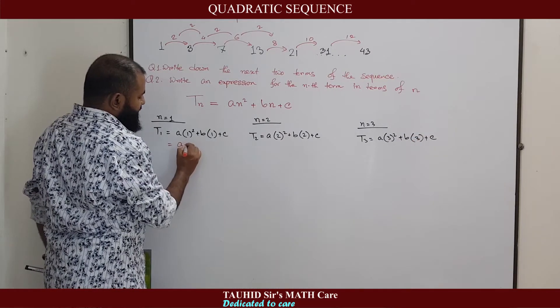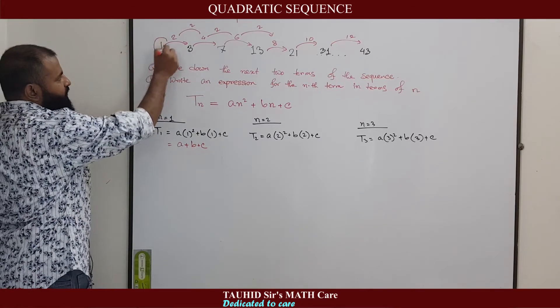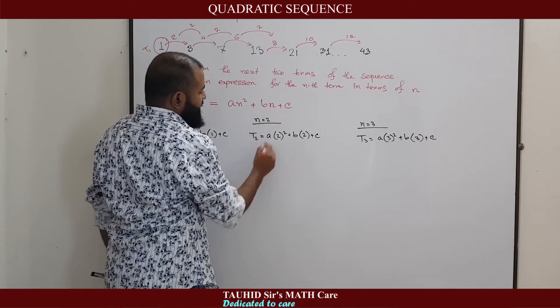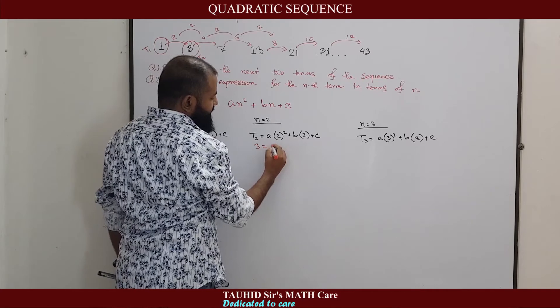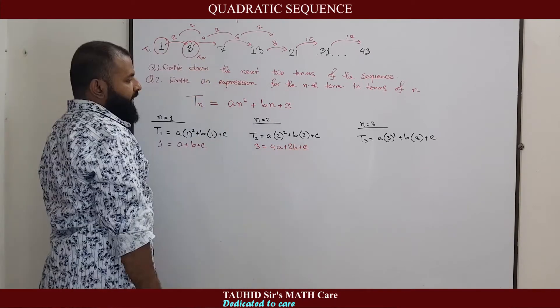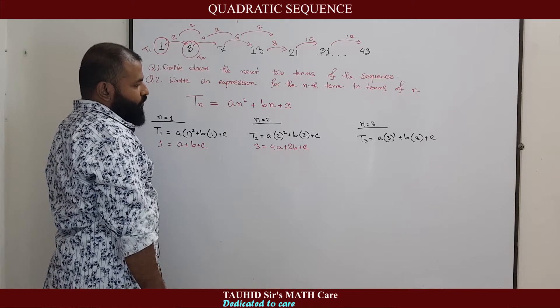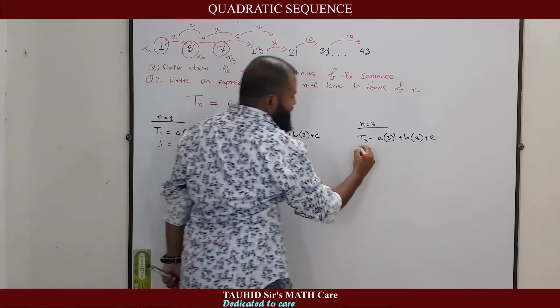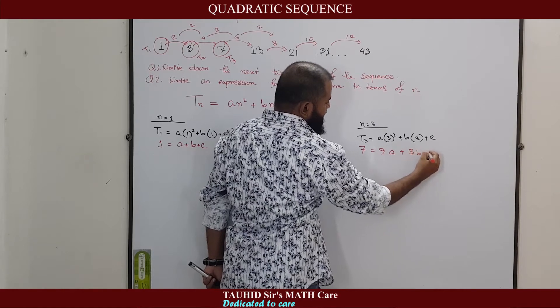For n equal to 1, T1 equal to A plus B plus C, and the value of T1 is the first term, 1. For n equal to 2, the second term T2 is 3, and this is 4A plus 2B plus C. And for the third term, n equal to 3, the value of T3 is 7. 7 equal to 9A plus 3B plus C.